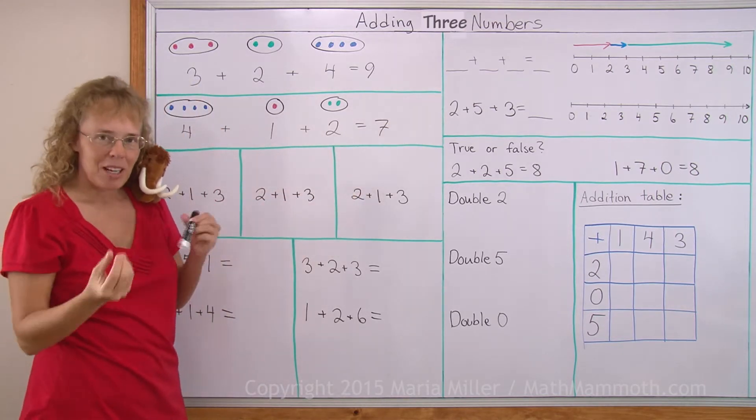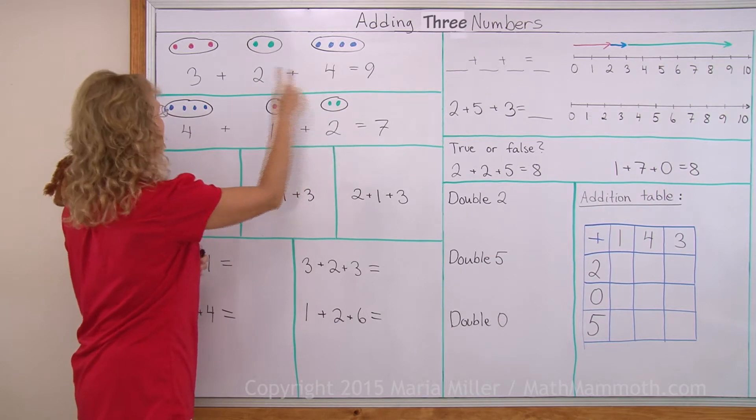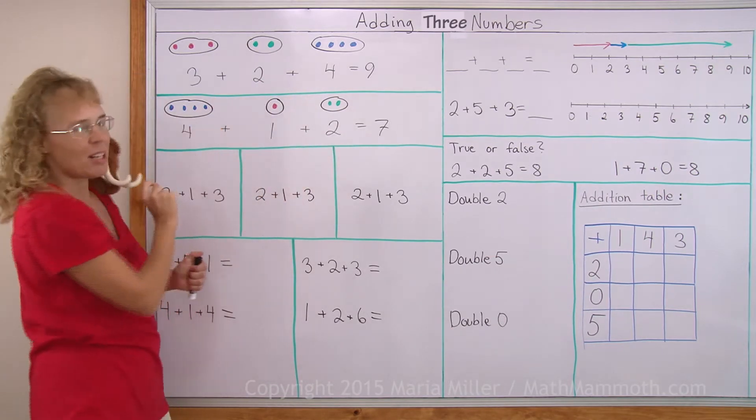Again, I could add them in some other order. I could start here. One, two, three, four, five, six, seven. I would still get seven.